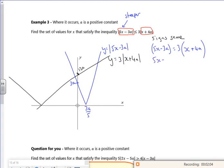So I've got 5x minus 3a is 3x plus 12a. So 2x is 15a, x is 15a over 2. There. And that was my original parts of my graphs. So that will be this bit.